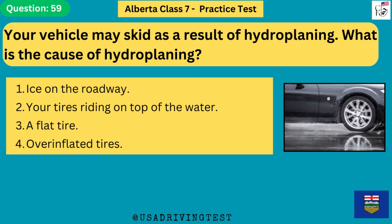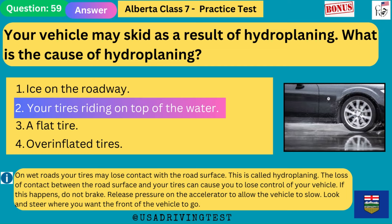Your vehicle may skid as a result of hydroplaning. What is the cause of hydroplaning? 1. Ice on the roadway. 2. Your tires riding on top of the water. 3. A flat tire. 4. Overinflated tires. The answer is 2: your tires riding on top of the water. On wet roads your tires may lose contact with the road surface — this is called hydroplaning. The loss of contact can cause you to lose control of your vehicle. If this happens, do not brake. Release pressure on the accelerator to allow the vehicle to slow, then look and steer where you want the front of the vehicle to go.